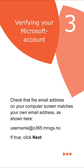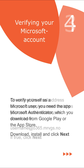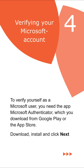Verifying your Microsoft account: check that the email address on your computer screen matches your own email address — username@O365.mrvgs.no. If correct, click Next. To verify yourself as a Microsoft user, you need the Microsoft Authenticator app, which you can download from Google Play or the App Store. Download, install, and click Next.